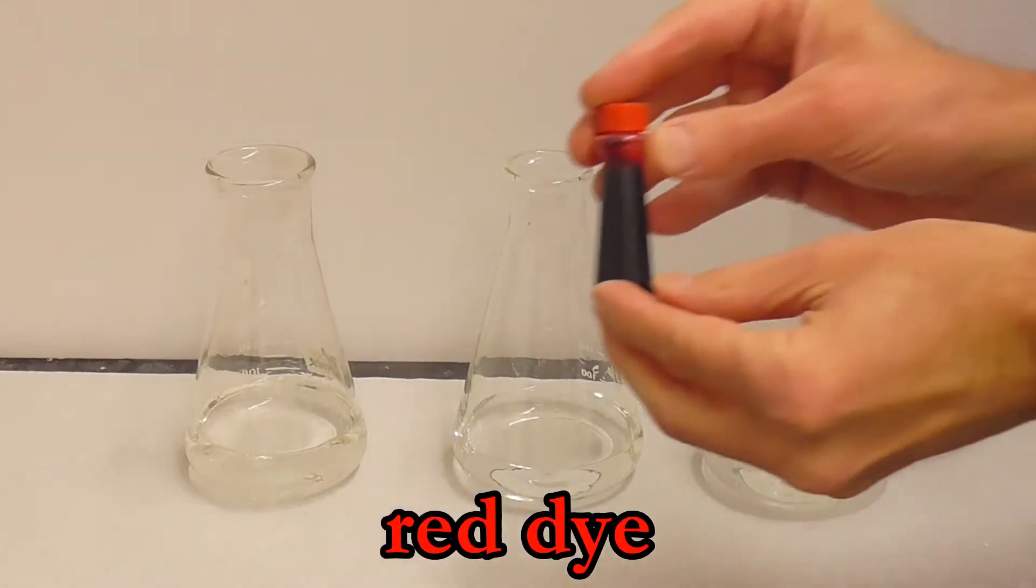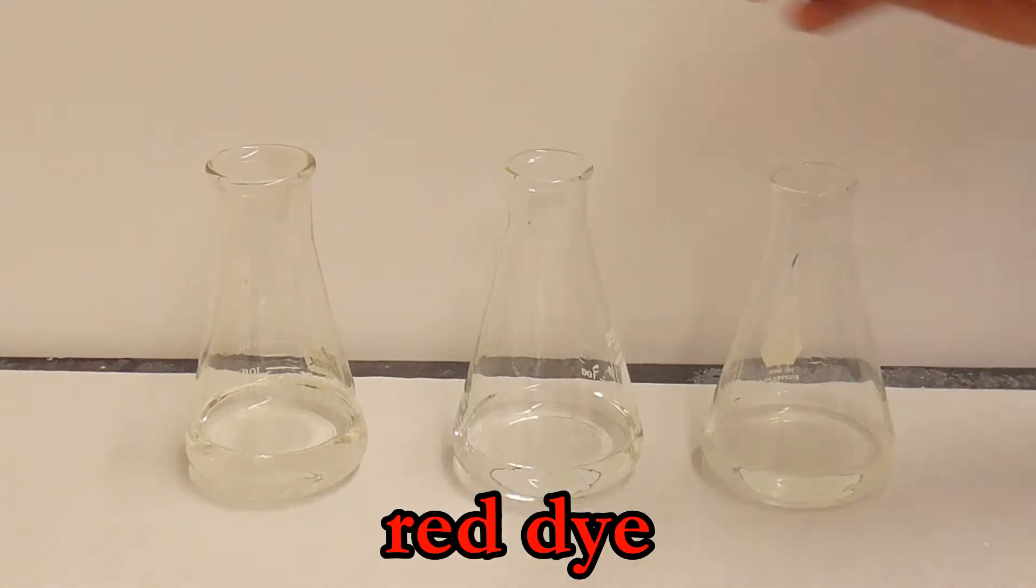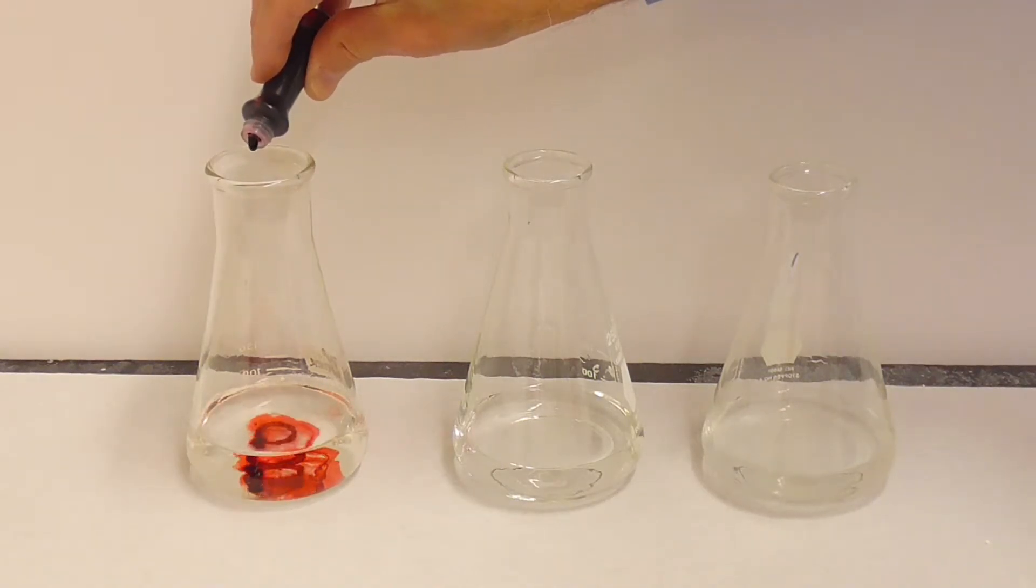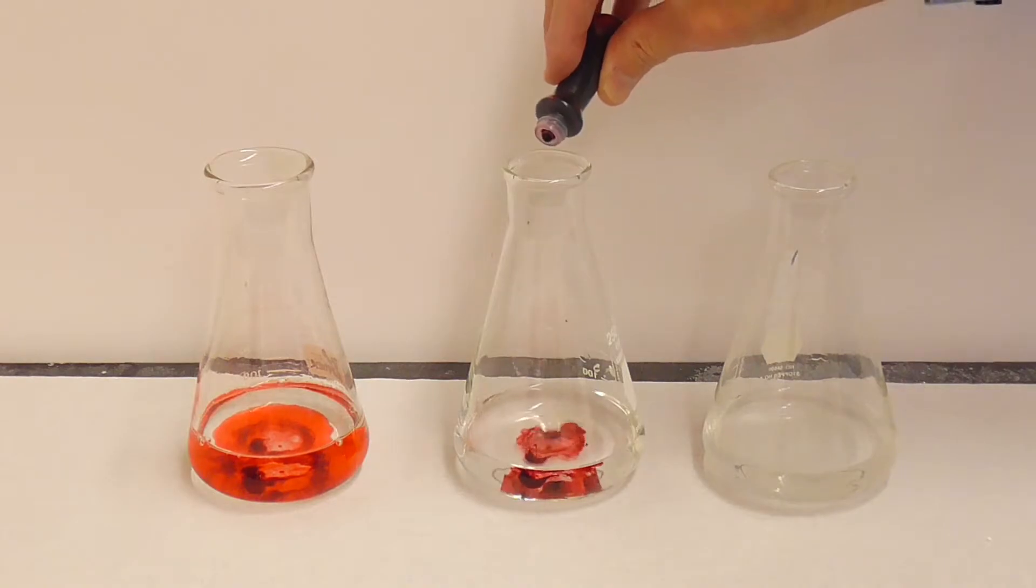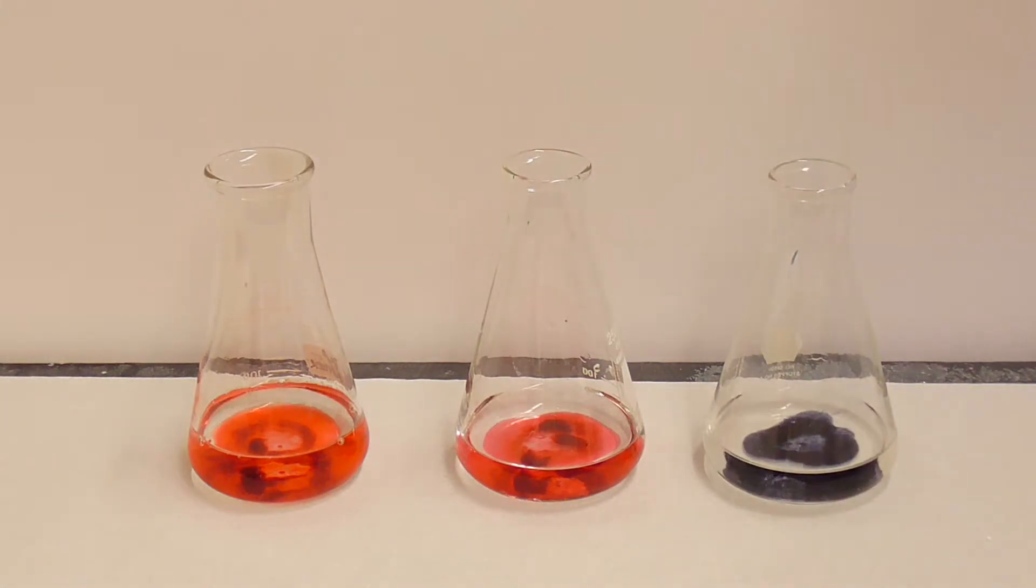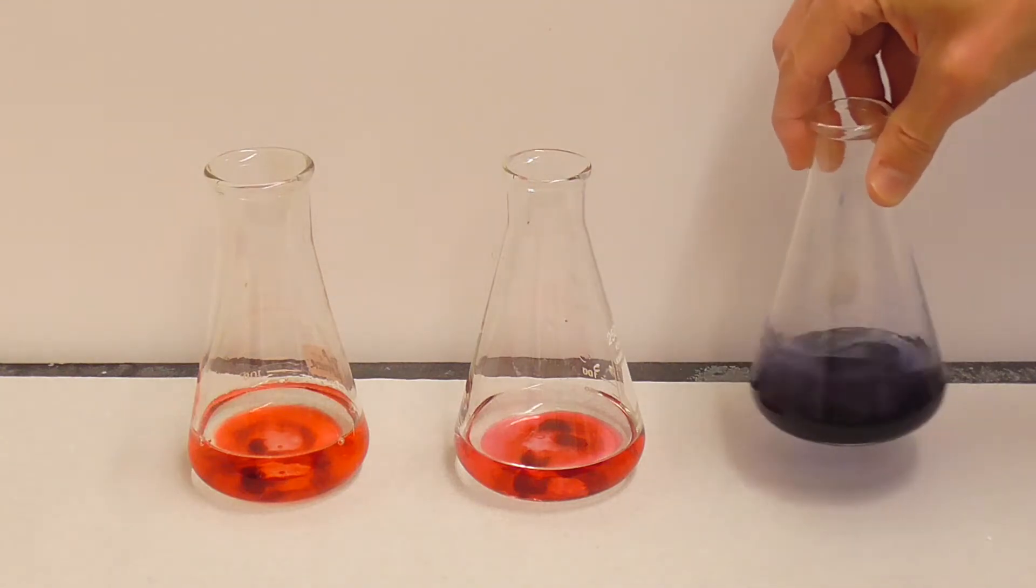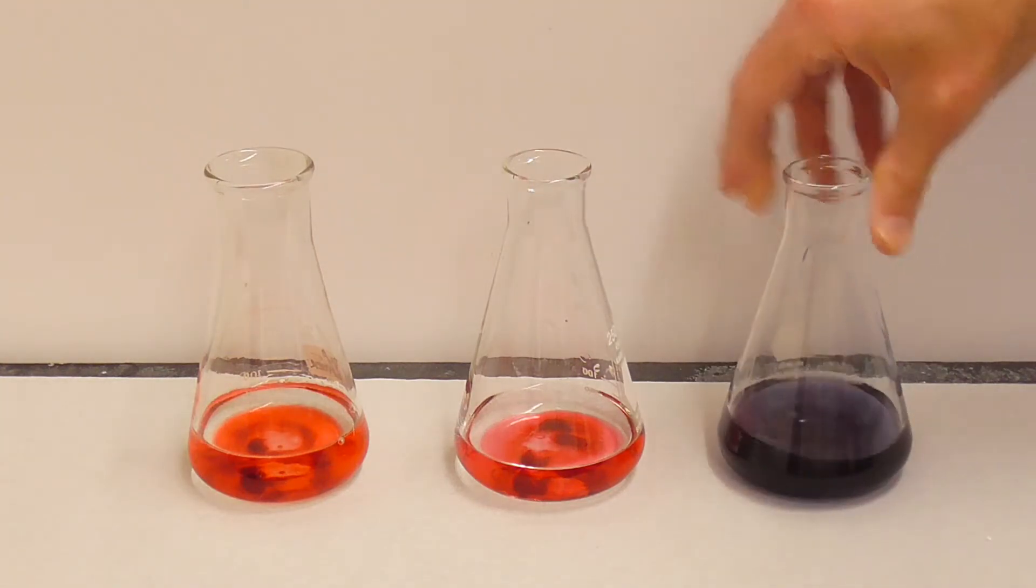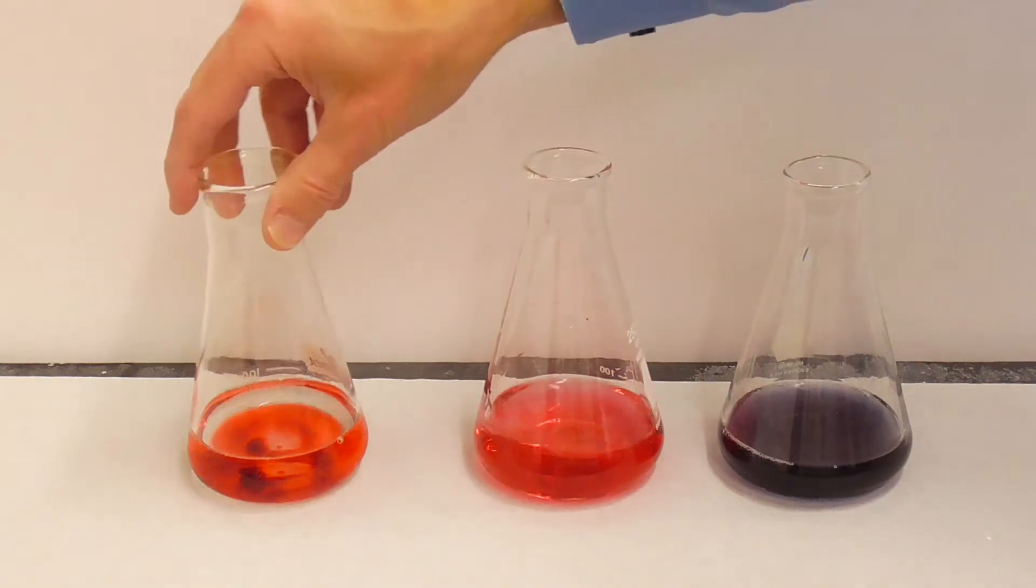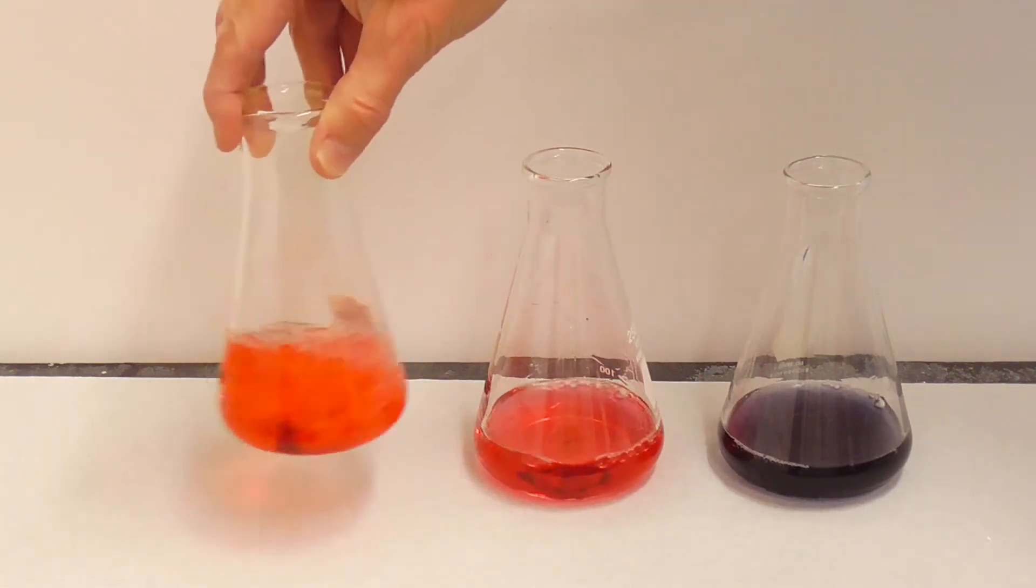Let's try the red food dye this time. The first flask contains vinegar which has a low pH. The second flask contains water and the last flask contains ammonia which has a high pH. It looks like we get a dark purple color in the high pH ammonia, a red color in water, and a cherry red color at the low pH of vinegar.